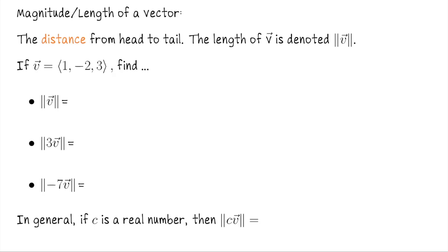Going through our vector operations, we've seen scalar multiplication and vector addition. Now let's talk about how to compute the magnitude of a vector. Recall magnitude means length — how do we measure how long a vector is? The length is the distance from the head to the tail, i.e., how long the arrow is. We denote it by the double absolute value symbol, so this means the length of V. Suppose V is the vector 1, negative 2, 3. Let's compute the length of V, then the length of 3V, then the length of negative 7V, and afterwards make a general statement about the length of a scaled vector.